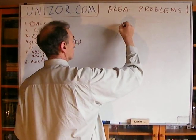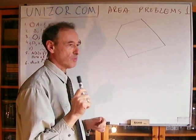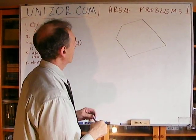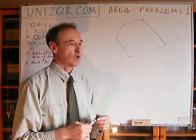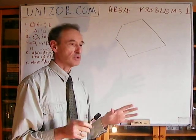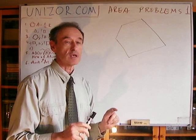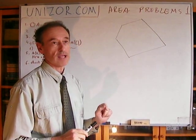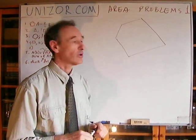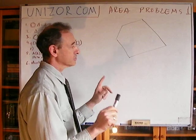Here is our polygon, and we must say it is a convex polygon. How can I construct a triangle that has the same area as this particular polygon? I will construct another polygon with one fewer vertex than the one we have right now. How can I reduce the number of vertices without changing the area?